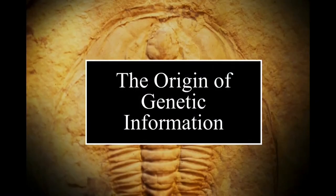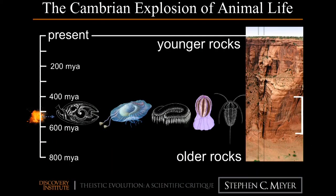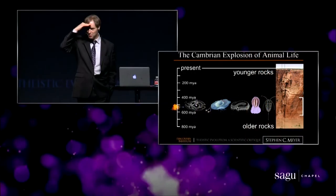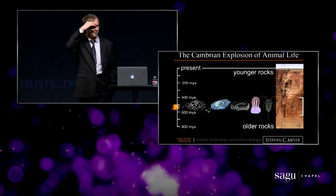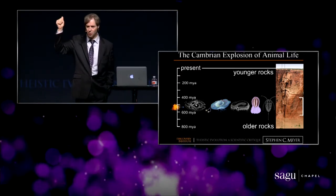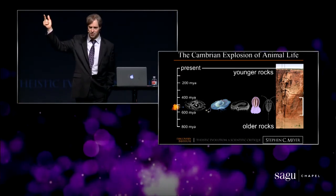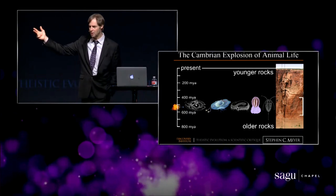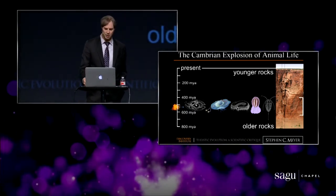The first challenge is a problem known as the origin of genetic information. I used to ask my students: if you want to give your computer a new function, what do you have to give it? Code — or information, instructions. We know this because we live in an information age.